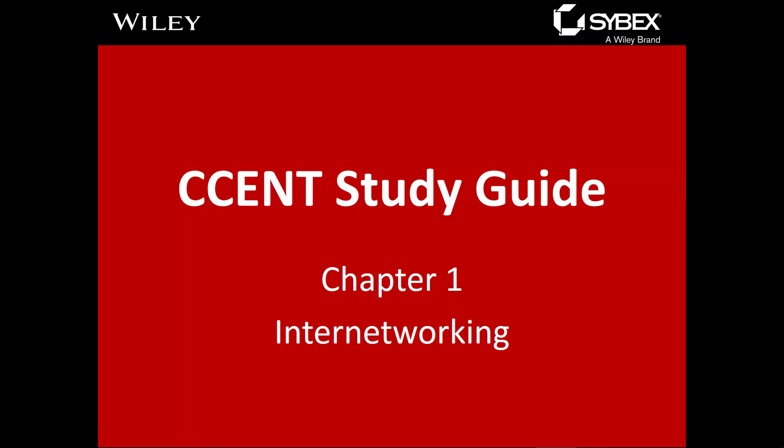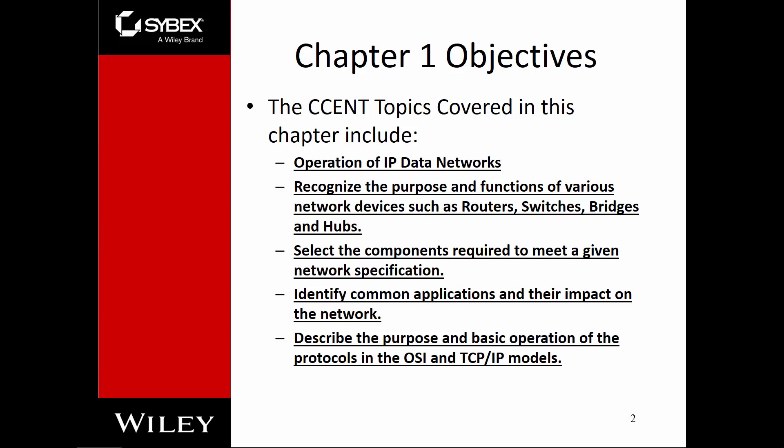Chapter 1 is about internetworking. The main focus of this chapter is understanding the basic operation of an IP data network, recognizing the purpose and function of different devices — routers, switches, bridges, and hubs — looking at specific components that allow a network to run, identifying common applications and their impact on our network, and talking about the basic operations of our protocol stack in the OSI and TCP/IP models.